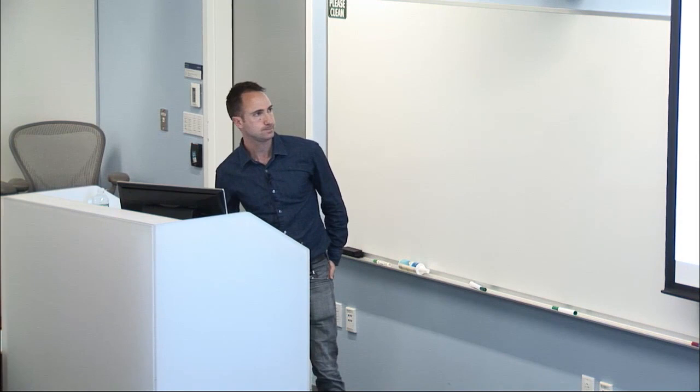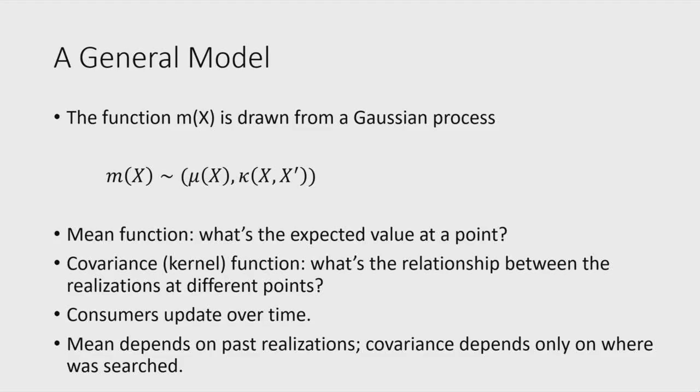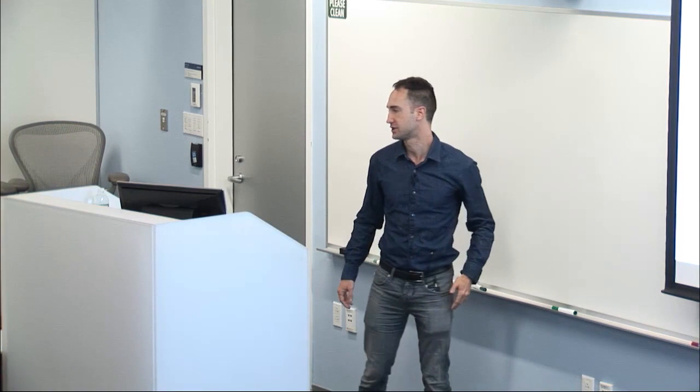The function M is drawn from a Gaussian process. Consumers update as Bayesians over time. The updating process has the property that the posterior mean depends on past realizations (where I searched determines my mean), while the posterior covariance depends only on which locations were searched, not on the realized payoffs there.